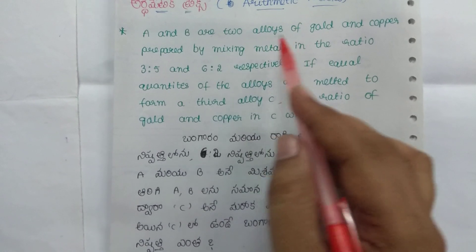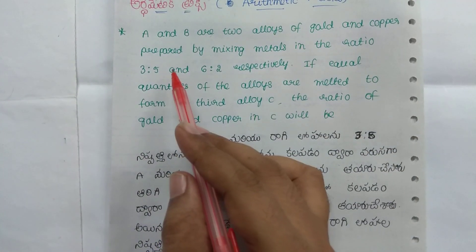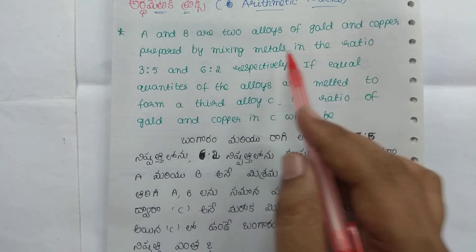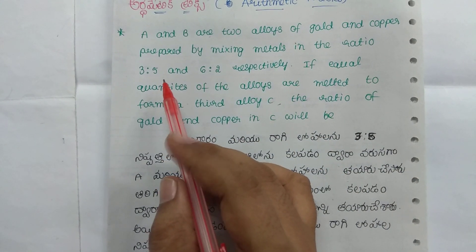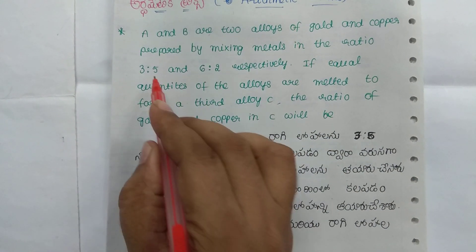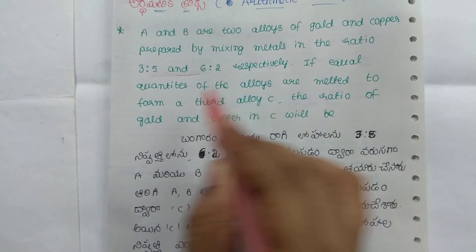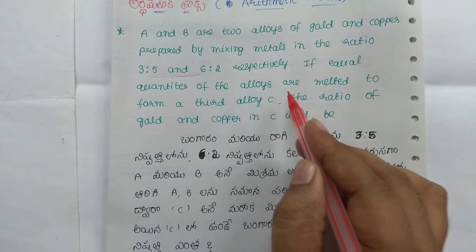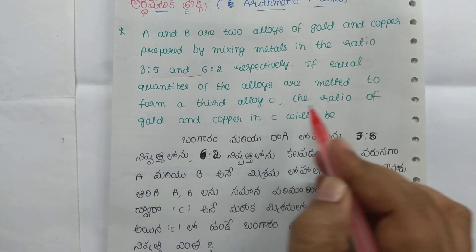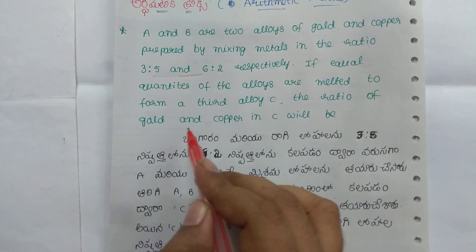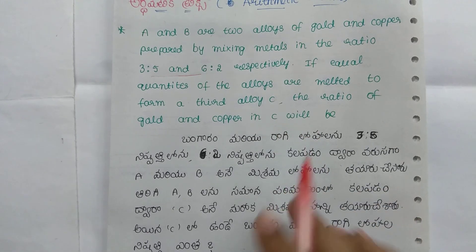A and B are two alloys of gold and copper prepared by mixing metals in the ratio of 3 is to 5 and 6 is to 2. If equal quantities of alloys are melted to form a third alloy C, find the ratio of gold and copper in C.